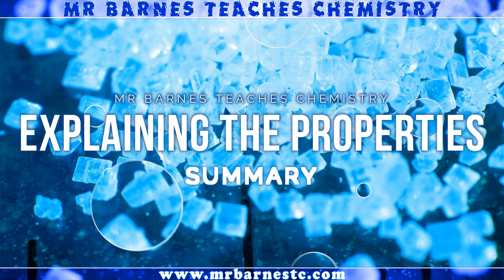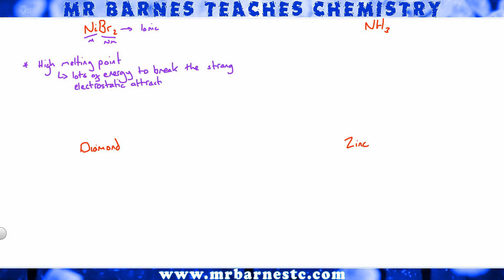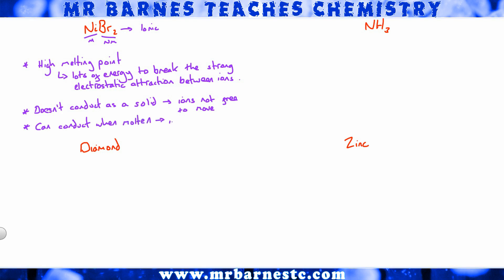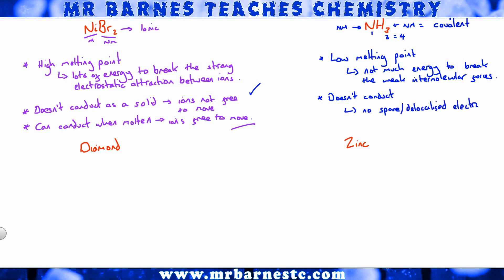Let's bring it all together with four chemicals. NiBr2 — nickel is a metal, bromine is a nonmetal — therefore ionic: high melting point, lots of energy needed to break the strong electrostatic attraction. As a solid it doesn't conduct because ions are not free to move; as a liquid it can conduct because ions are free to move. NH3 — nitrogen is a nonmetal, hydrogen is a nonmetal — covalent. Only four atoms, so it's simple covalent: low melting point because not much energy is needed to break the weak intermolecular forces, and it doesn't conduct because there are no spare or delocalized electrons.